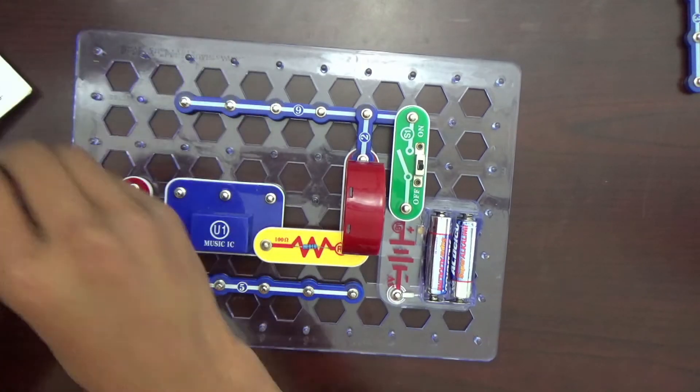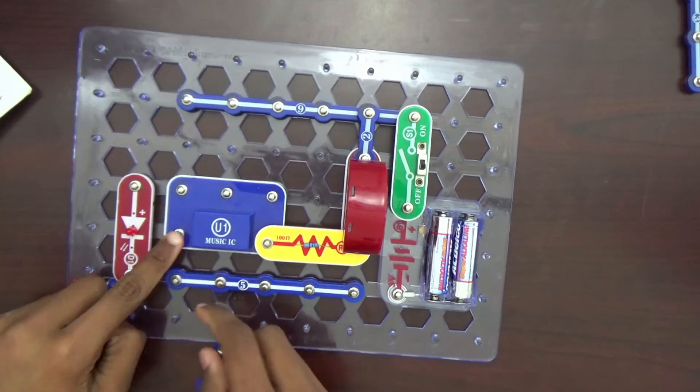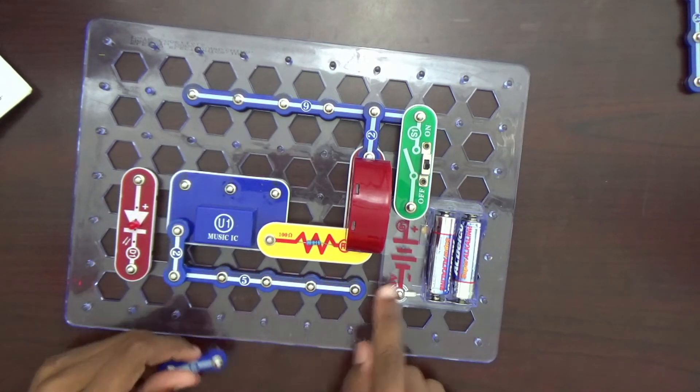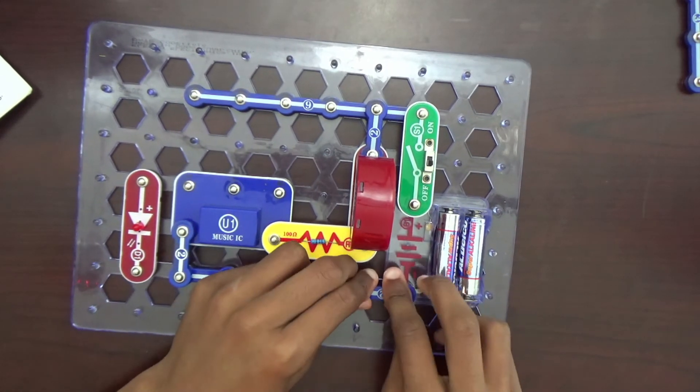And connect the last pin of the music IC to the 5 snap. And the 5 snap to the battery minus.